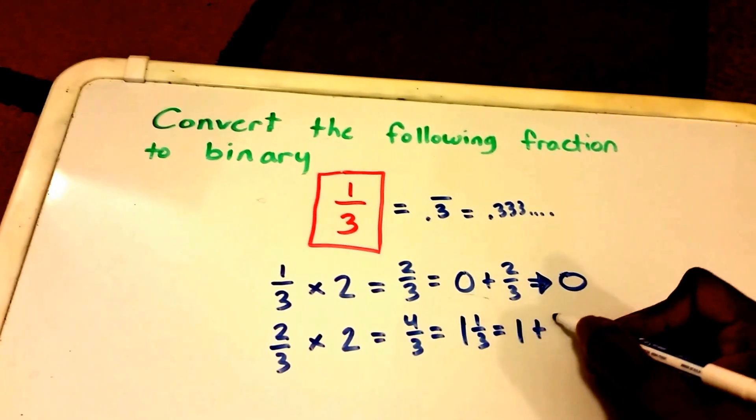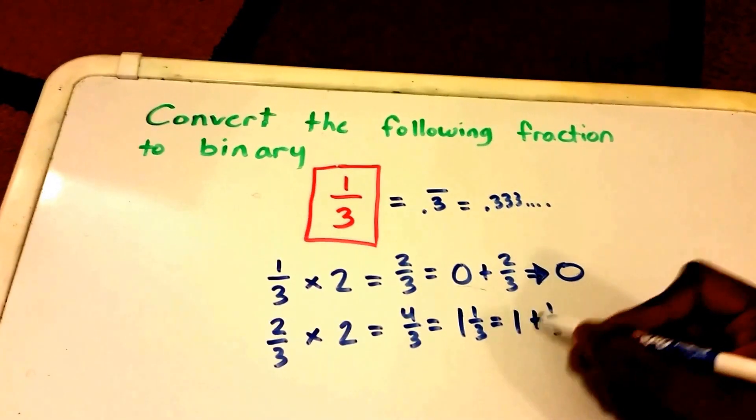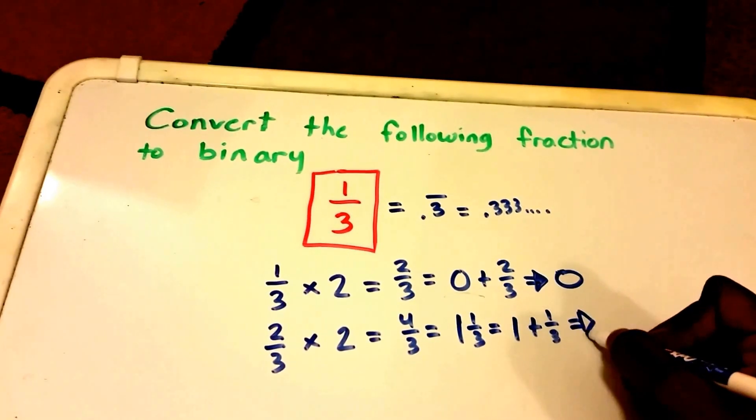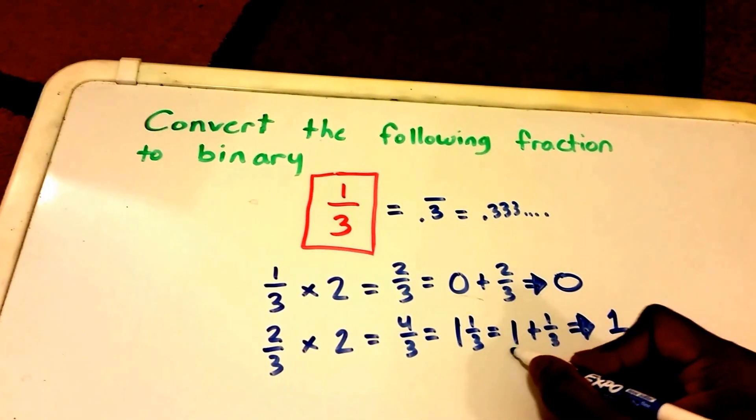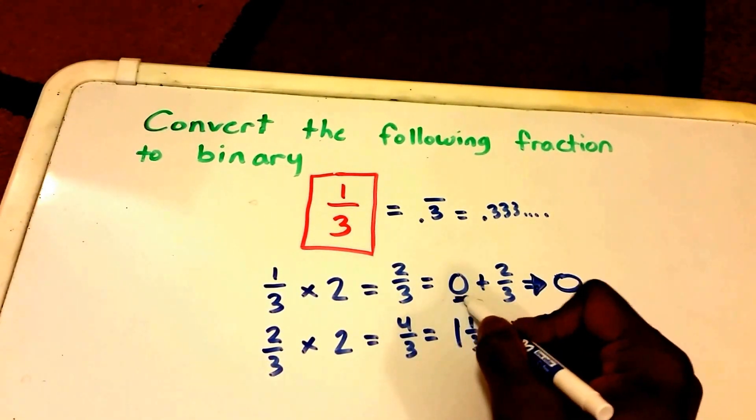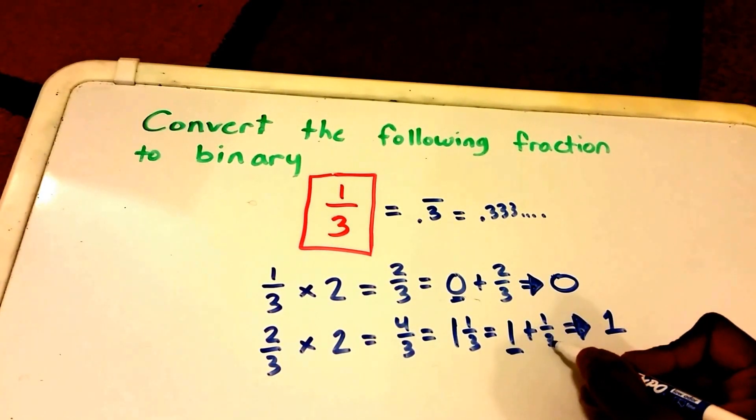So we take that whole number, which is 1, and that becomes our second binary digit, that 1 right here, just like we took the 0 before.